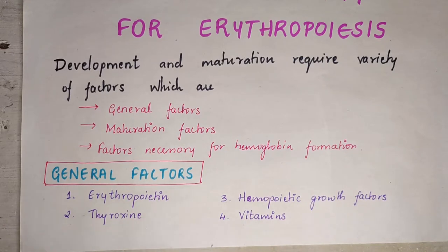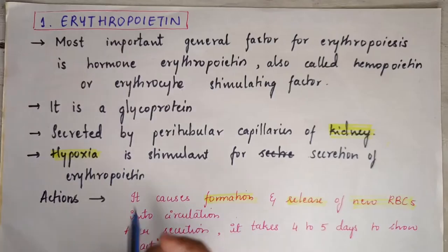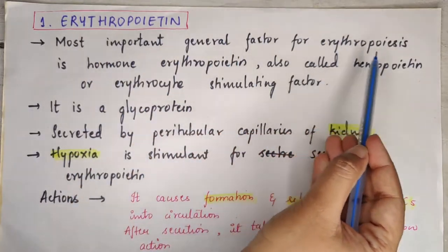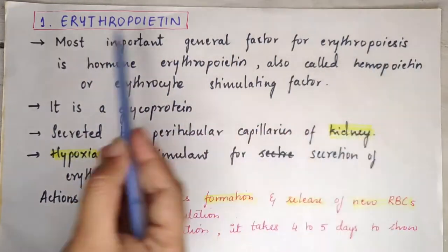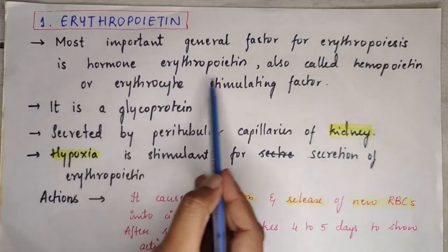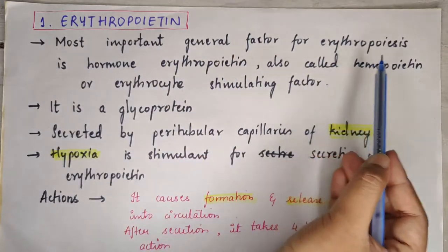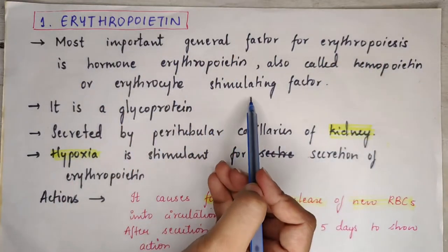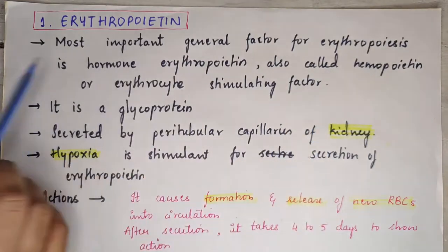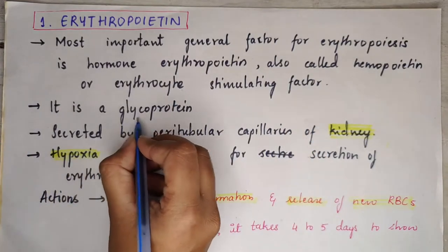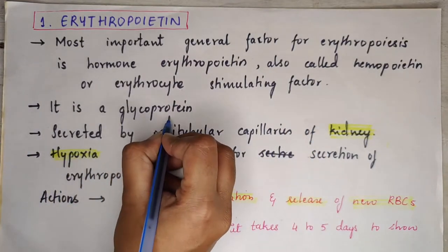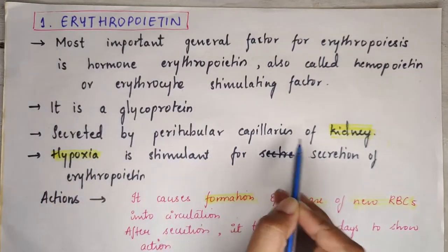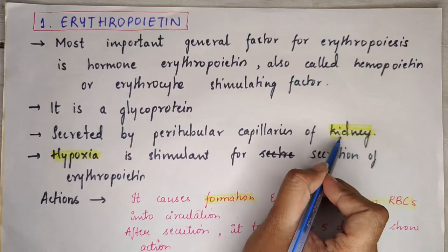The most important general factor for erythropoiesis is the hormone erythropoietin, also called hemopoietin or erythrocyte stimulating factor. Erythropoietin is a glycoprotein secreted by the peritubular capillaries of the kidney.